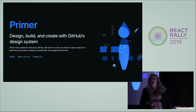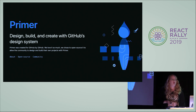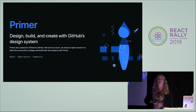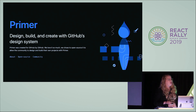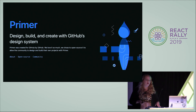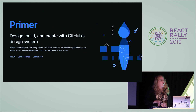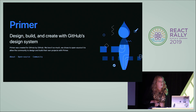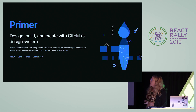I work at GitHub and I work on the Primer design system. How many of you have design systems at your company? Seems like maybe a third. So I'm going to talk about what design systems are and how we approach building a React component library as part of our design system. But even if you aren't currently working with a design system, I'm going to cover a lot of general API design philosophy that could be applied anywhere.